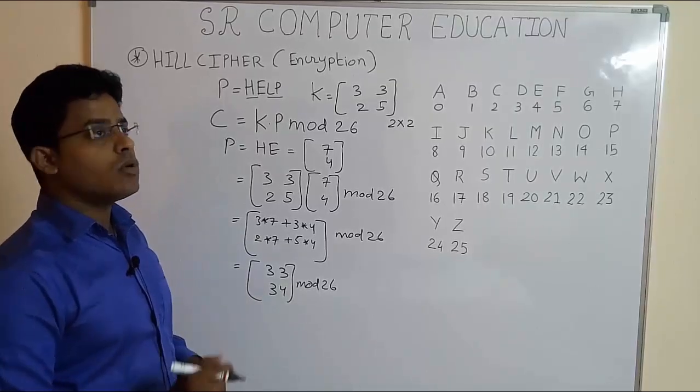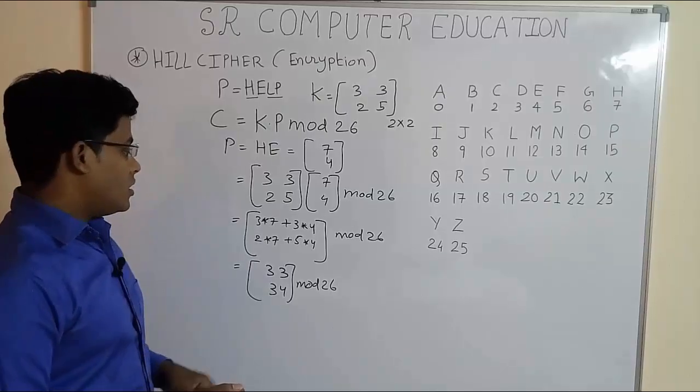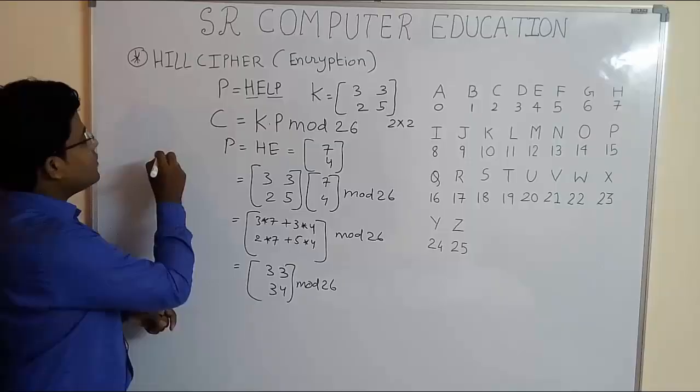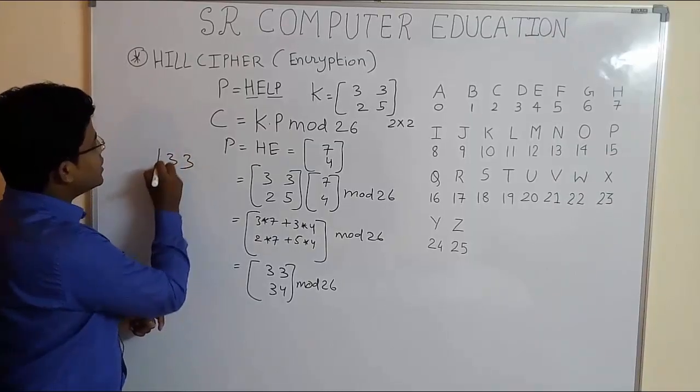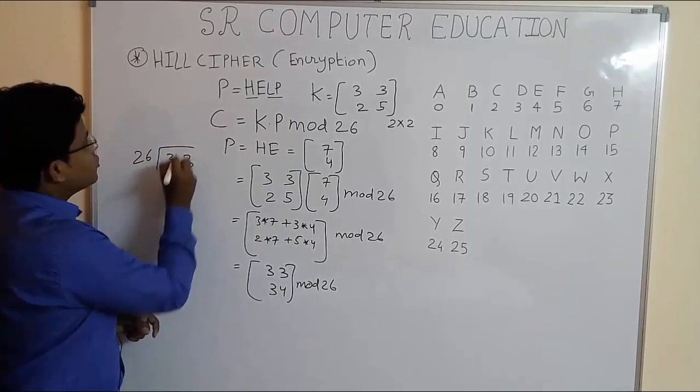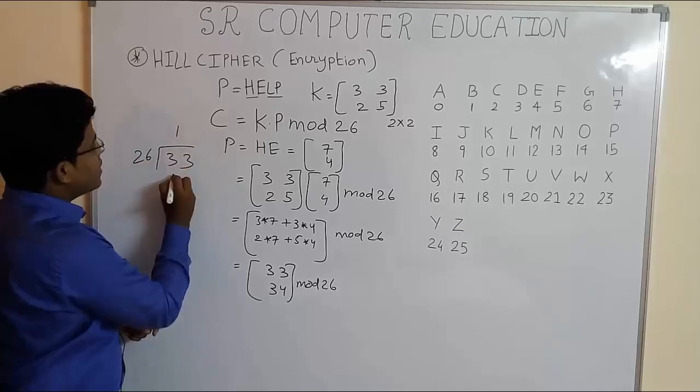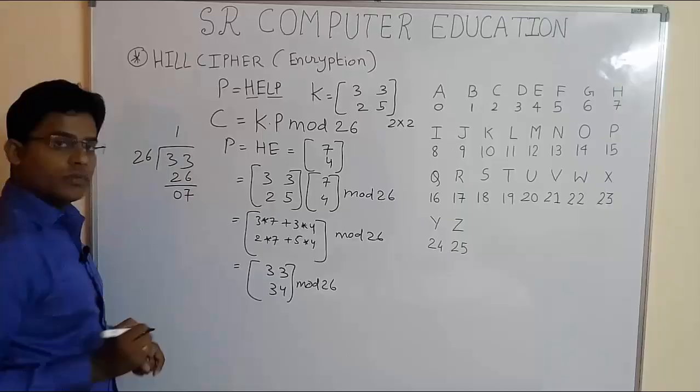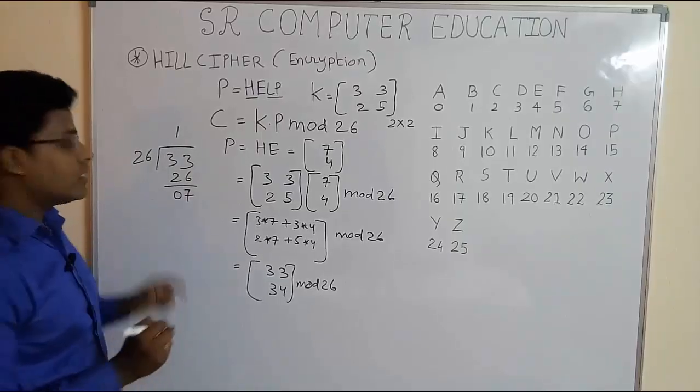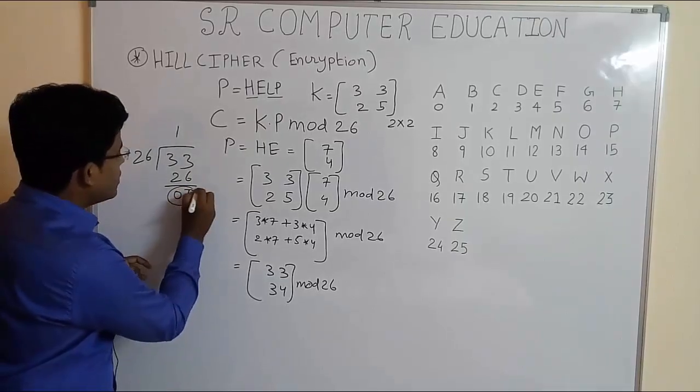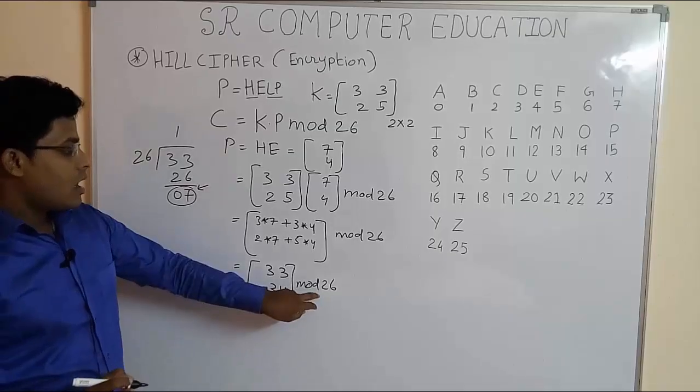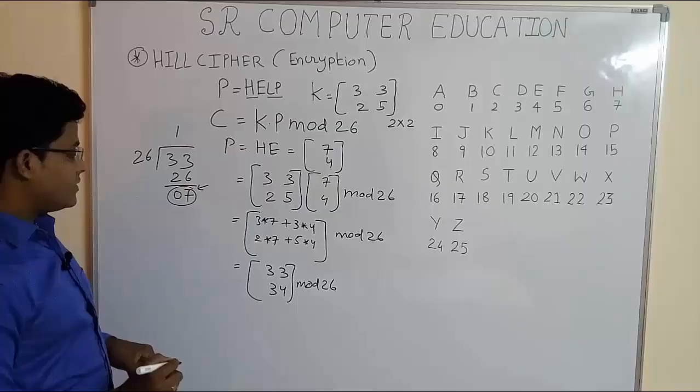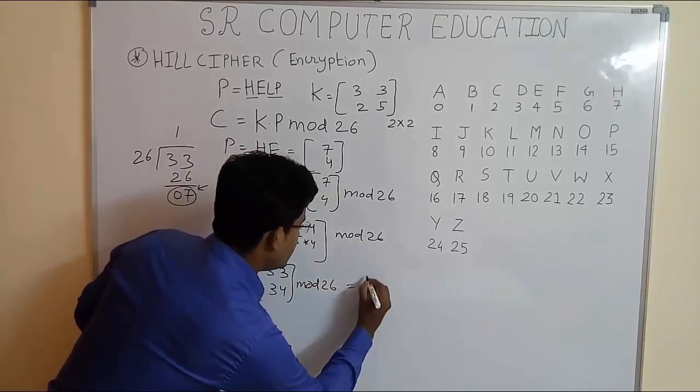For doing the mod operation, that is 33, we have to divide the number 33 by 26. So 26 ones are 26 and the remainder is 7. So we have to remember one thing here. Whatever we get remainder is the answer of the mod operation. So 33 mod 26 is 7.